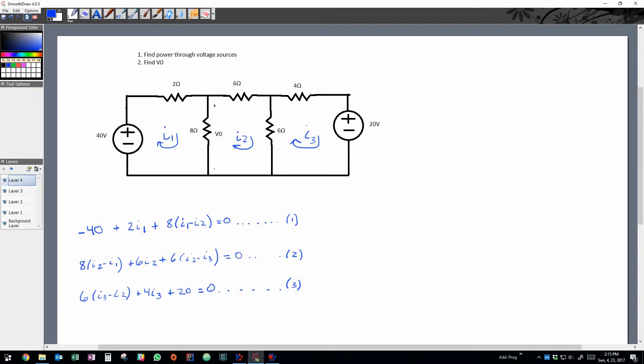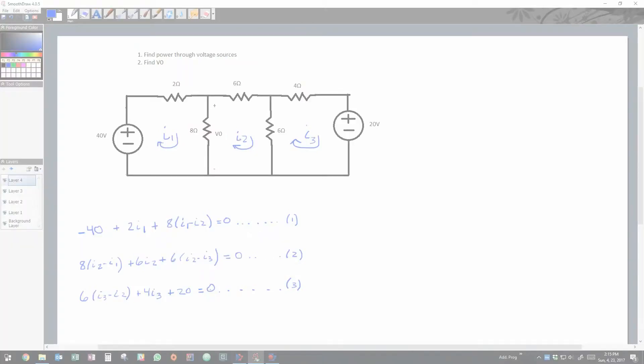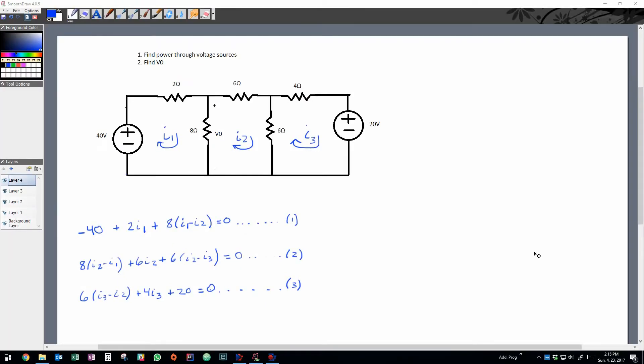Whenever you have a resistance that has more than one current going through it, you're going to take the subtraction of the direction of the current. So you can see in the second and third equations I've done the exact same thing there. So now that we have three unknowns, three equations, we can go about solving for i1, i2, and i3.